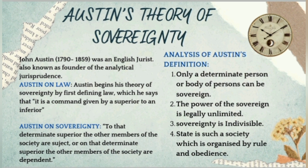Analyzing Austin's definitions of law and sovereignty, he refers to a determined person as the sovereign. The power of the sovereign is legally unlimited. Sovereignty is indivisible. The state is a society organized by the rule of obedience, where inferiors or subjects obey the superior or determinate authority.